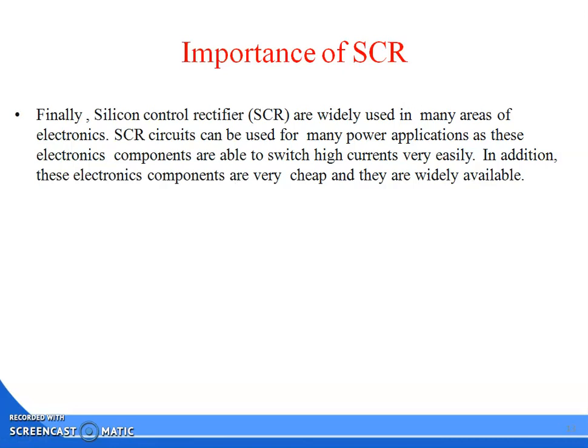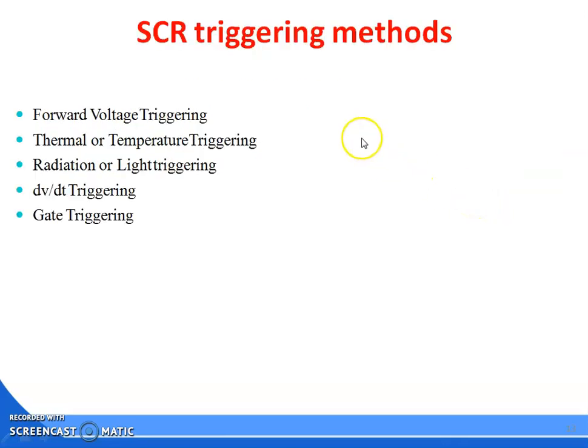No mechanical parts, noiseless operation. Finally, silicon controlled rectifiers are widely used in many areas of electronics. The SCR circuits can be used for many power applications as these electronic components are able to switch high currents very easily. In addition, these electronic components are very cheap and widely available.